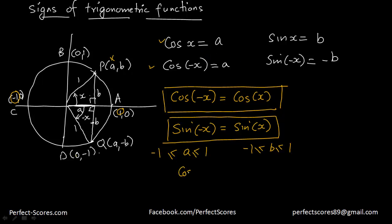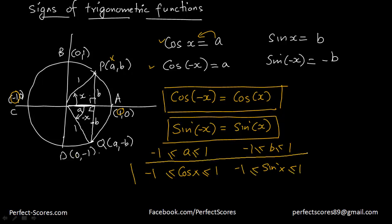Substituting: cosine x is going to be less than or equal to 1 and greater than or equal to negative 1. Similarly, sine x is going to be less than or equal to 1 and greater than or equal to negative 1. This is the range of these two functions — a very important expression to know.